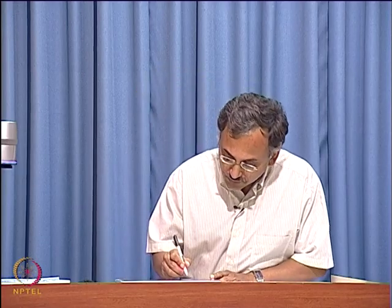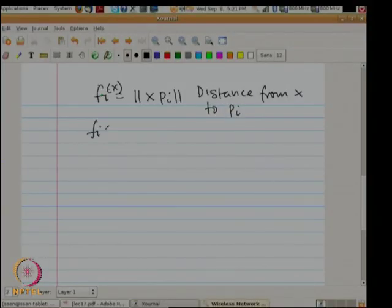So if you look at the function f_i(x), what is the shape of this function? It is a Euclidean distance. It is not a sphere — a sphere is a level set of this function — so it is a cone. If you draw this function, this is point p_i, and it looks like a cone. So this is function f_i: if you take any point x, this value is f_i(x).